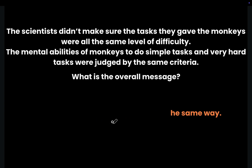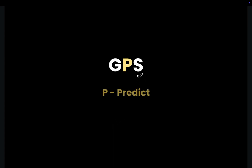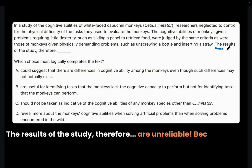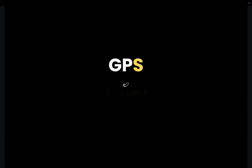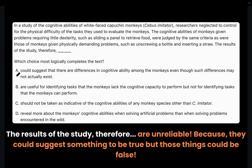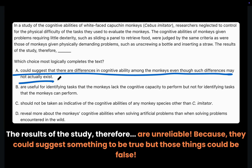Now we will use P — Predict. The results of the study therefore are unreliable because they could suggest something, but those things could be false. Now we will use S — Select. We will select the answer that matches our prediction.